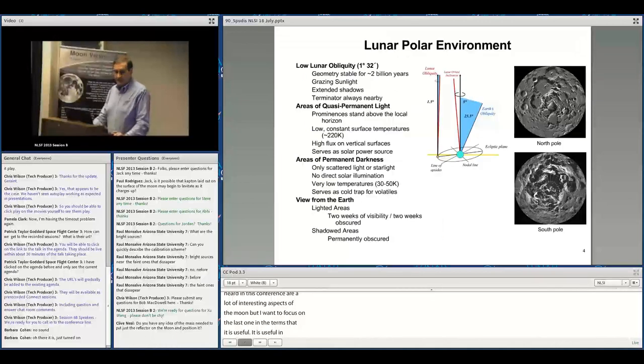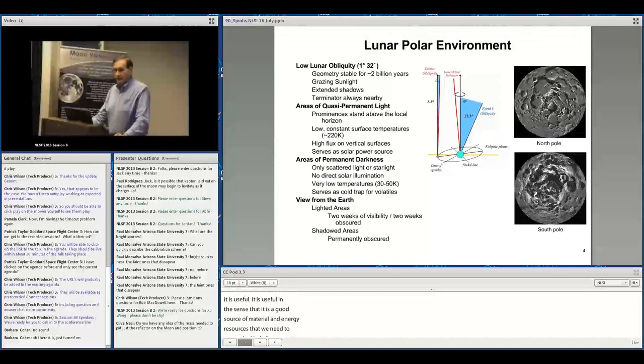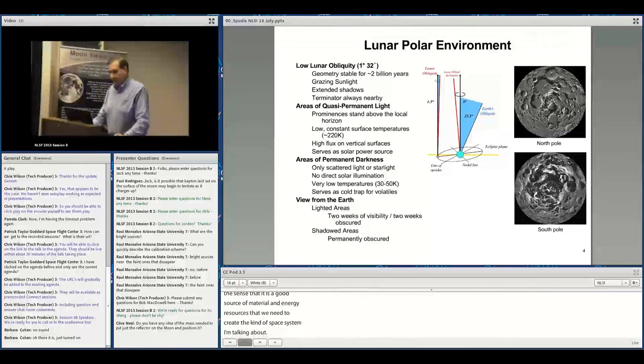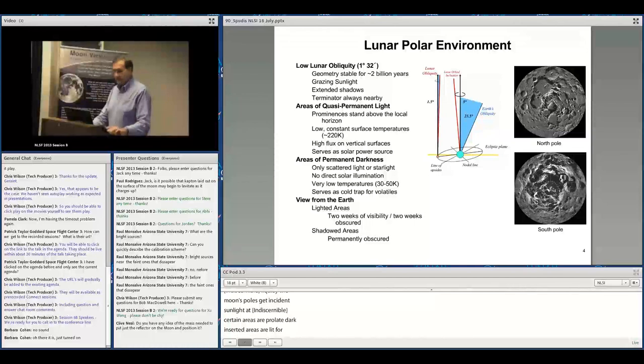The lunar poles are a micro-environment because of the Moon's low spin axis. Certain areas are permanently dark while others are lit for extended periods. This dichotomy permits thermally benign sunlit areas for power generation, while permanently dark areas can sequester volatiles, making them fairly abundant at the poles.